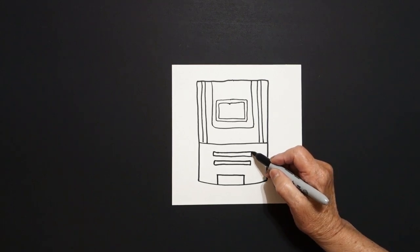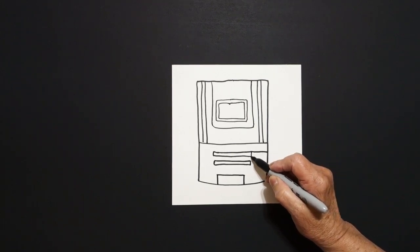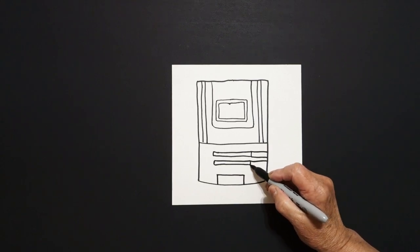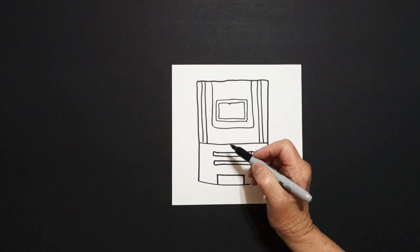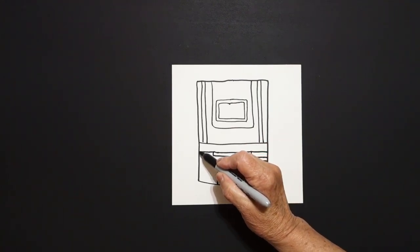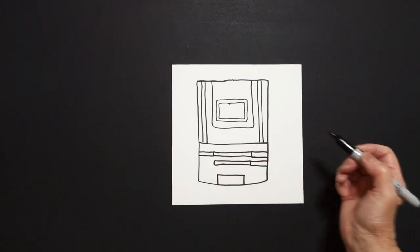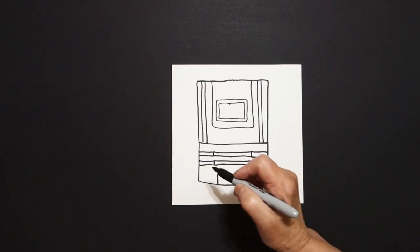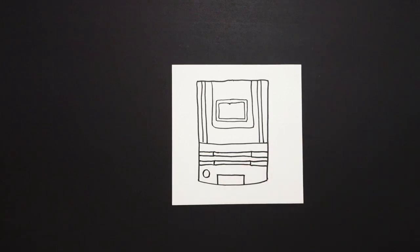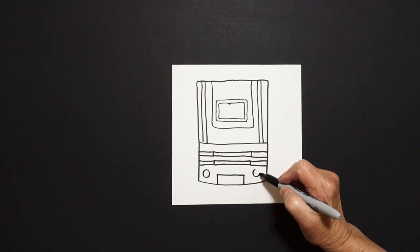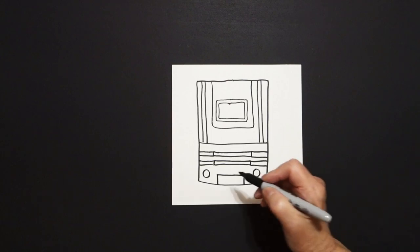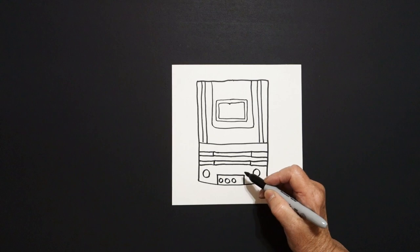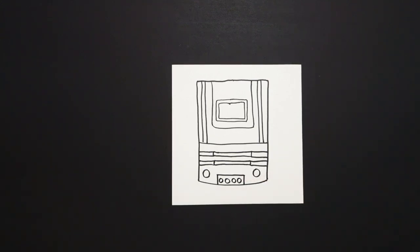Now come up here on the right and we're going to go one, two straight lines. Come down, one, two straight lines. Jump over to the left, one, two straight lines, one, two straight lines. Right here we're going to put a baby circle on the left, jump over, baby circle on the right. Right inside this space, one, two, three, four baby circles.